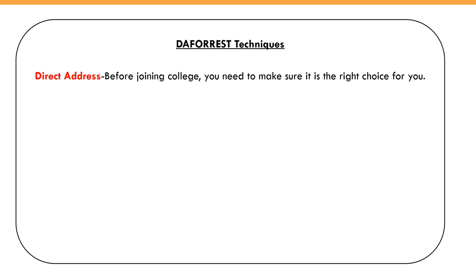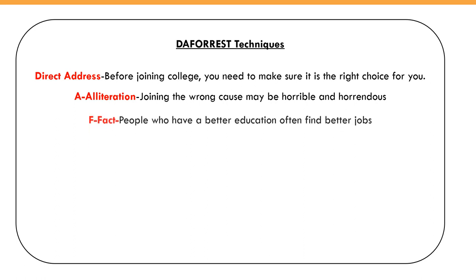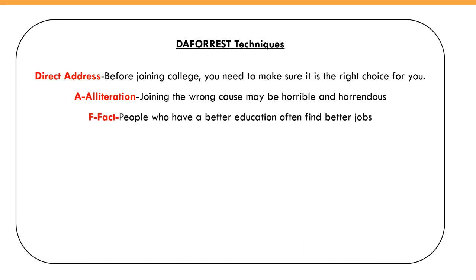The D stands for Direct Address — when you're talking directly to the reader. Example sentence: 'Before joining college, you need to make sure it's the right choice for you.' The word 'you' is where we've used direct address. The A stands for Alliteration — repeating the same starting letter. Example: 'Joining the wrong course may be horrible and horrendous' — alliteration because both words start with H.